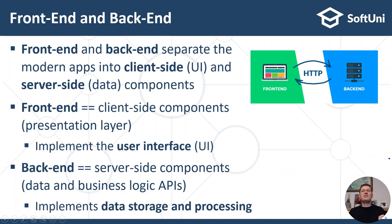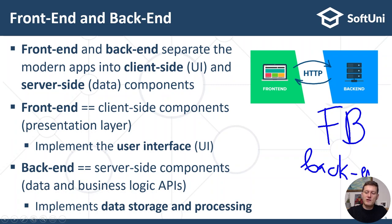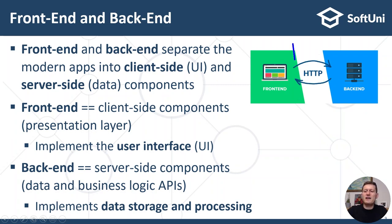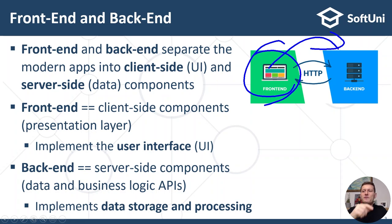An example of a back-end is the Facebook server-side infrastructure, which consists of servers, APIs, and other systems. It keeps the users, their friends, newsfeeds, shared links, messages, photos, and all the content and processing logic you see in Facebook. This content is delivered to front-end apps through the network using an API. When a client app requests the newsfeed for a certain user, the back-end retrieves the data from the database and sends it to the client over the network.